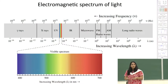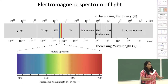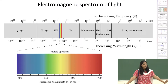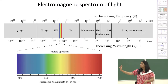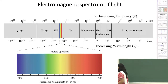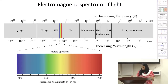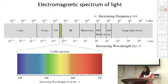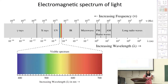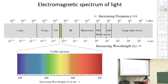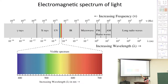Before we go to any spectroscopic technique, we need to understand what is light — or electromagnetic radiation. We all know that light is not just white; it can be split into seven colors. This visible region goes from 400 nanometers to 700 nanometers, but it is a very small part of the whole electromagnetic spectrum.